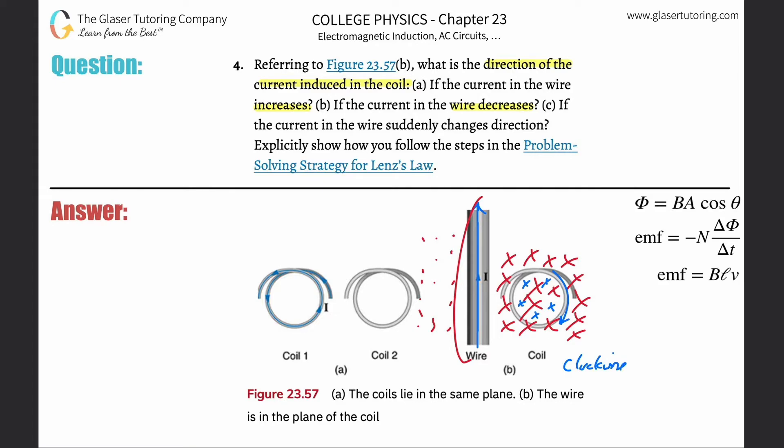And then letter C, it says if the current in the wire suddenly changes direction. So if the current now suddenly changes direction, we have to consider this. Let me erase all this. Remember, we had Xs originally, because the current, we have to think about how it changes. That's what's important. How it changes.